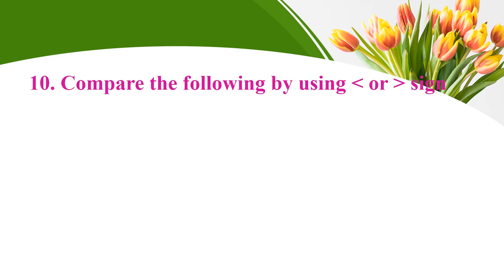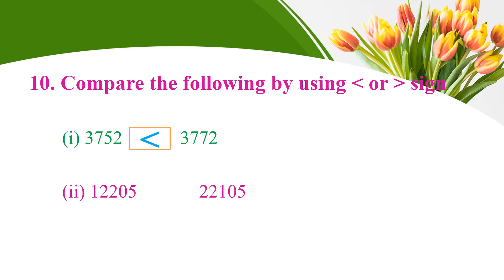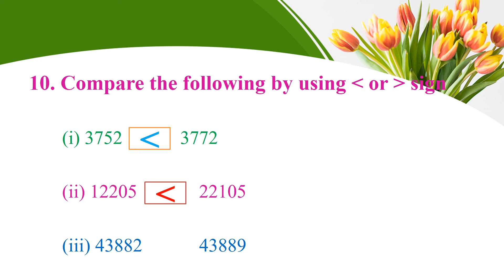Compare the following using less-than or greater-than signs: 3,752 and 3,772 — which is greater? That is 3,772. Next, 12,202 and 12,205 — which is greater? That is 12,205. Also 22,205 compared — 22,205. Then 43,882 and 43,889 — which is greater? That is 43,889.